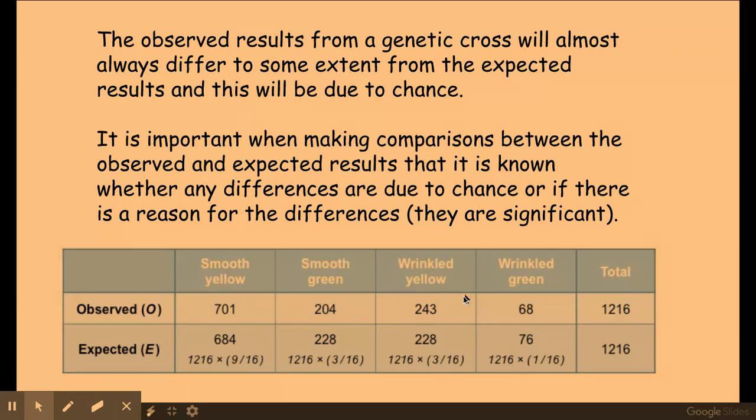What you've observed is what the offspring is from the actual cross, and then what you've expected you need to calculate using the expected ratio.